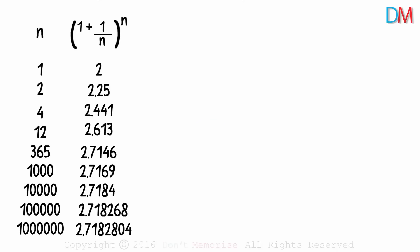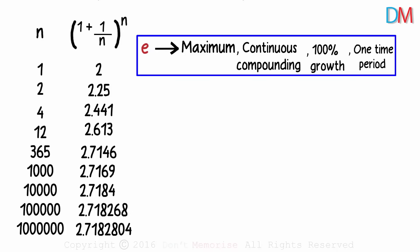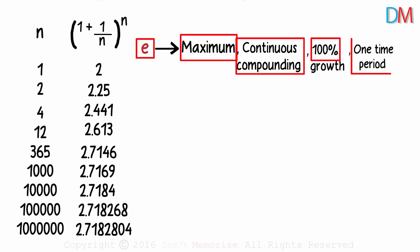What would be a layman friendly explanation for E then? It is the maximum possible result after continuously compounding a one hundred percent growth over one time period. Yes, that's E. Don't forget, we had assumed a one hundred percent growth here. And that's what E is. It's the maximum we get after a one hundred percent continuous compounding growth over one time period.